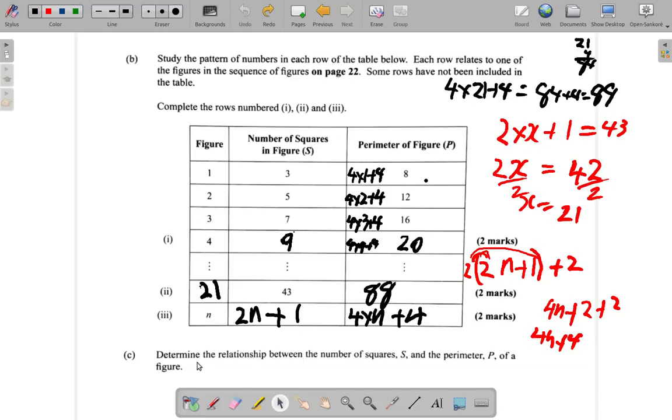Okay, part C of the question. It says, determine the relationship between the number of squares, S, and the perimeter, P, of a figure.